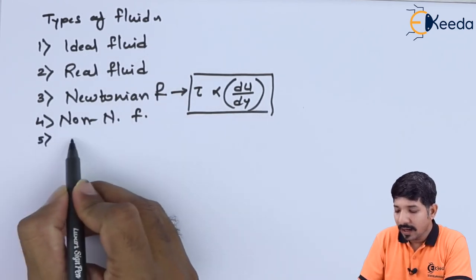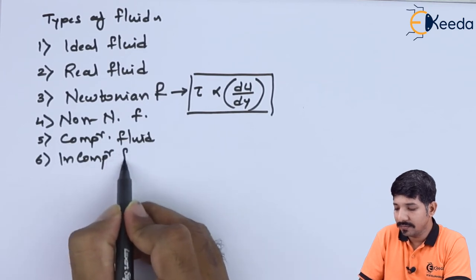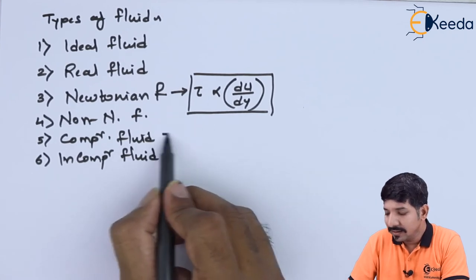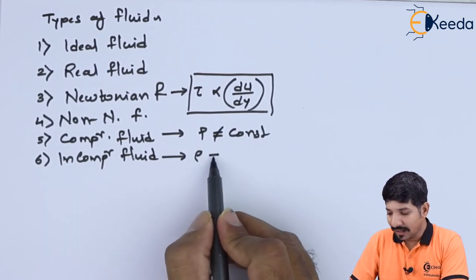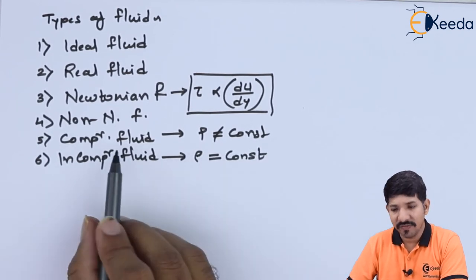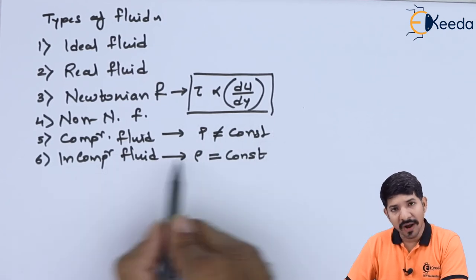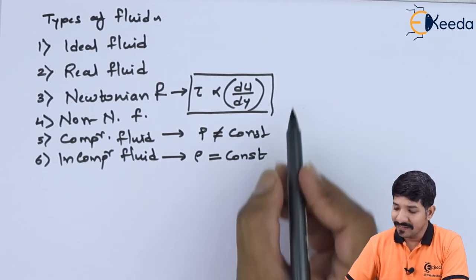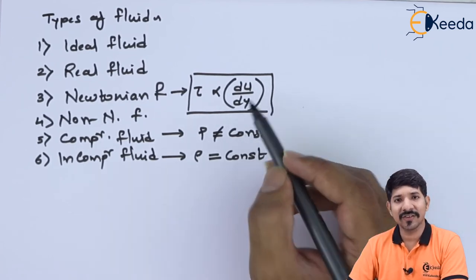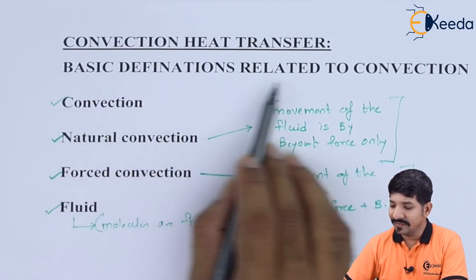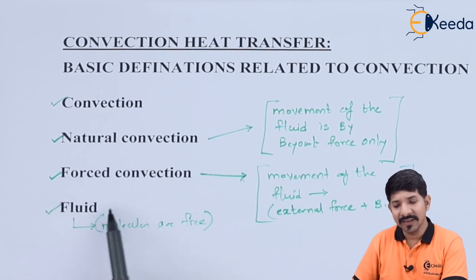Another category is compressible and incompressible fluids. In compressible fluids the density is not constant — all gases can be considered compressible fluids. In incompressible fluids the density is constant — all liquids are considered incompressible. We need to understand these types of fluid before performing analysis in convection. In this topic we covered the basic definitions for convection: the definition of convection itself, types of convection — natural and forced — and an overview of fluid types.